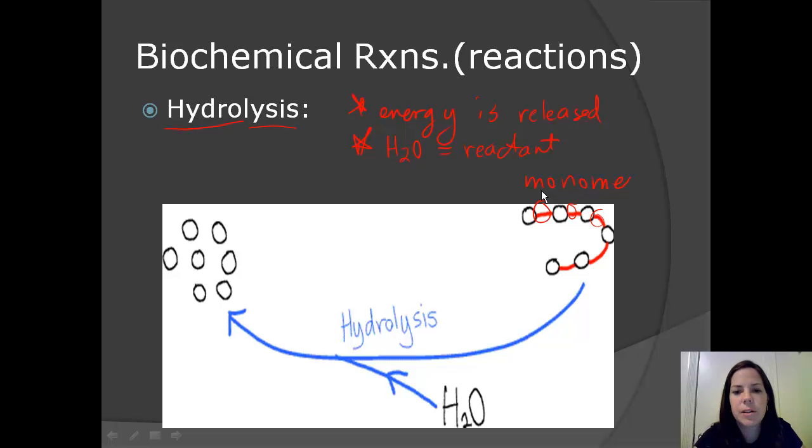And so the reaction is going to start on this side with our polymer. This is our complex molecule. And when we start releasing the energy and add some water, hydrolysis takes place and all those bonds are broken. So now we have all these monomers over here.